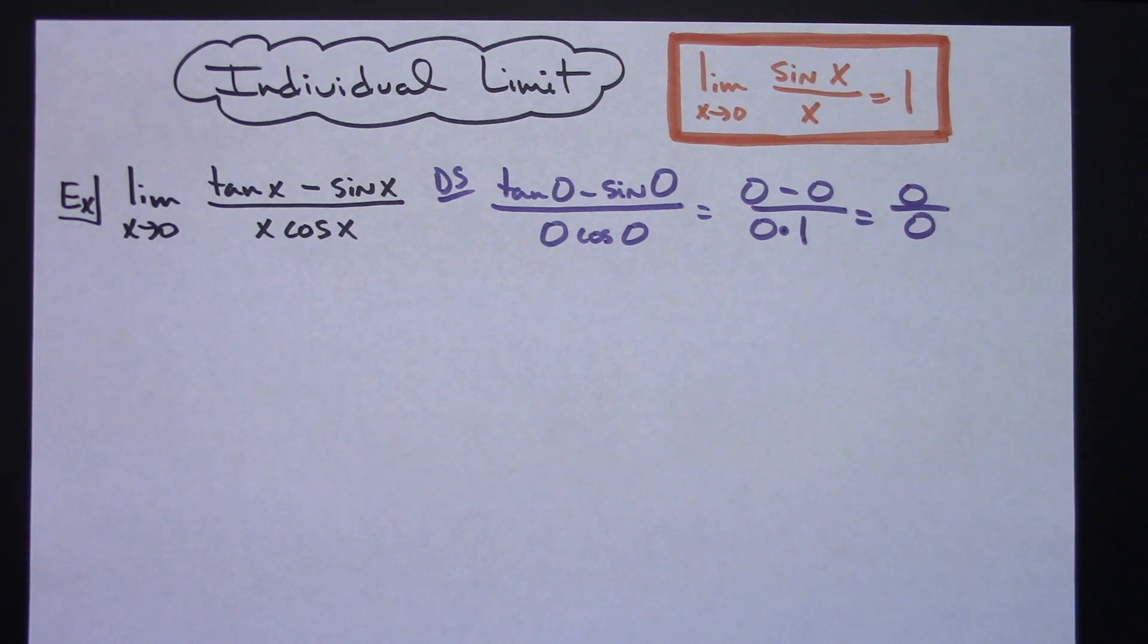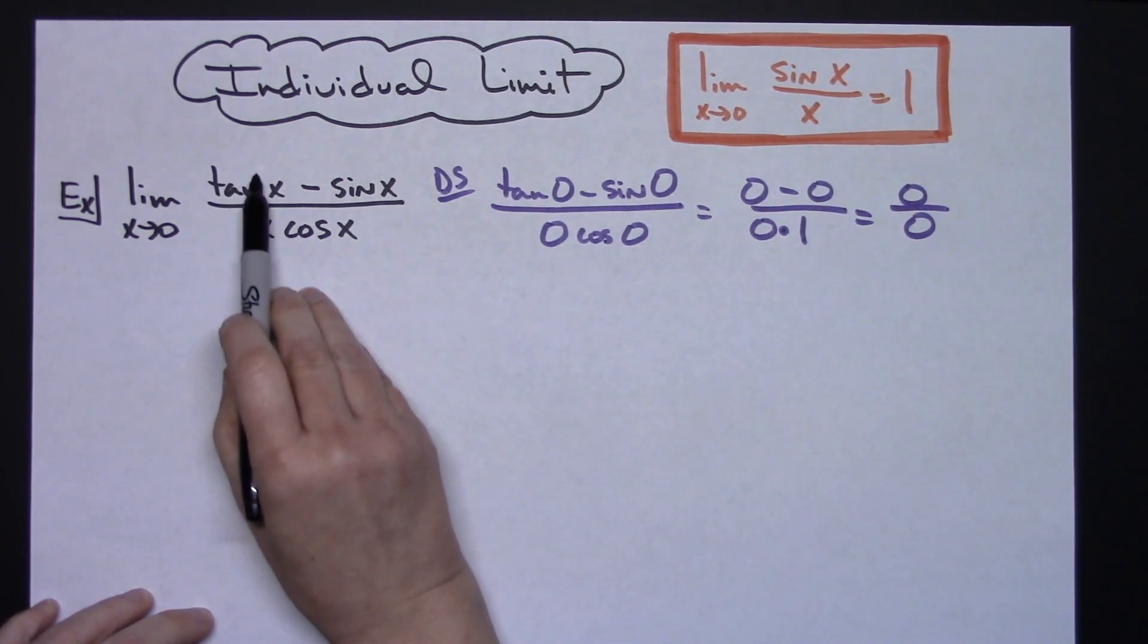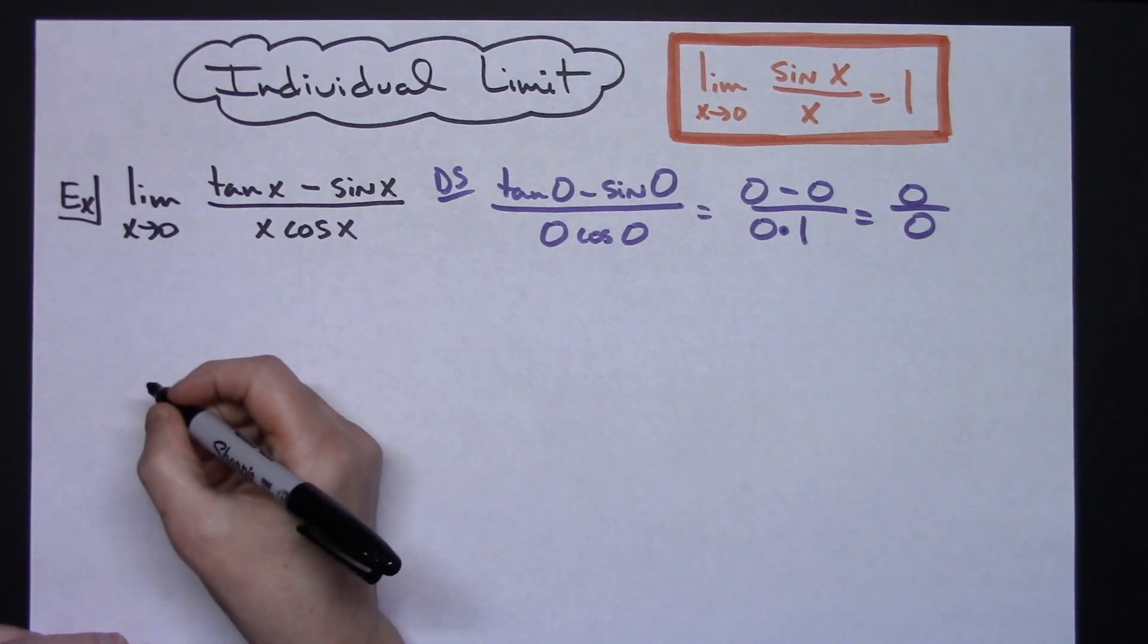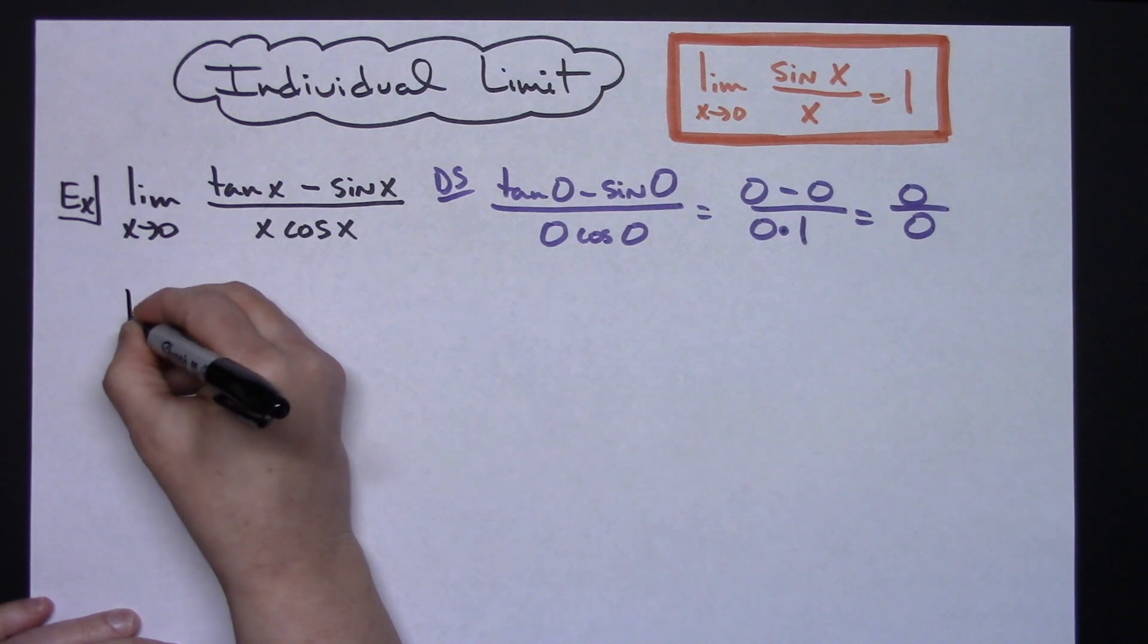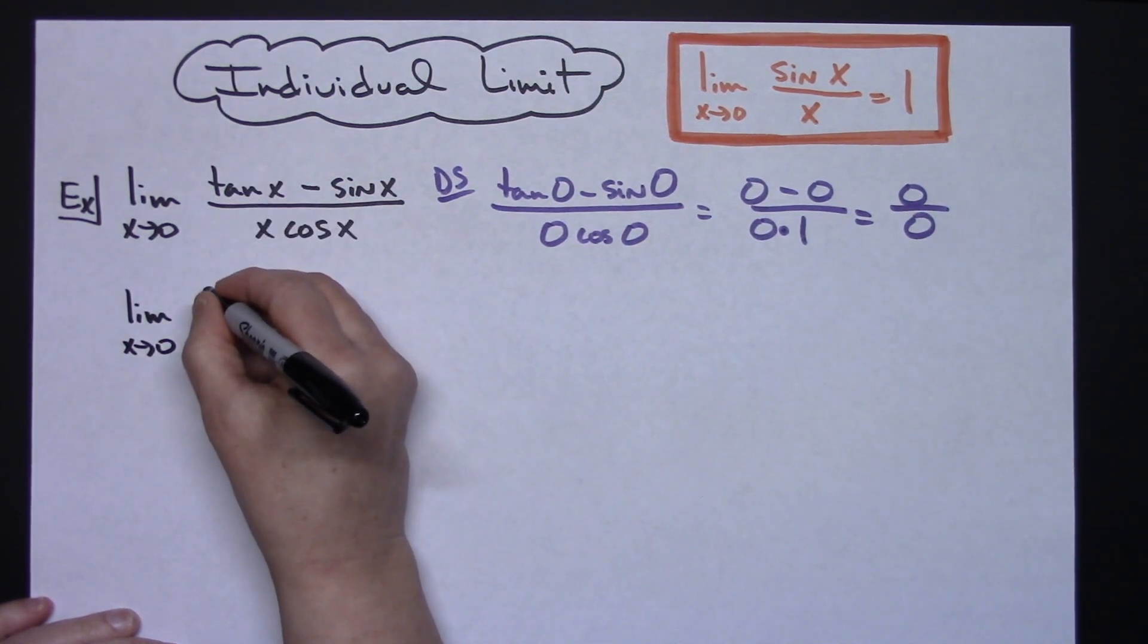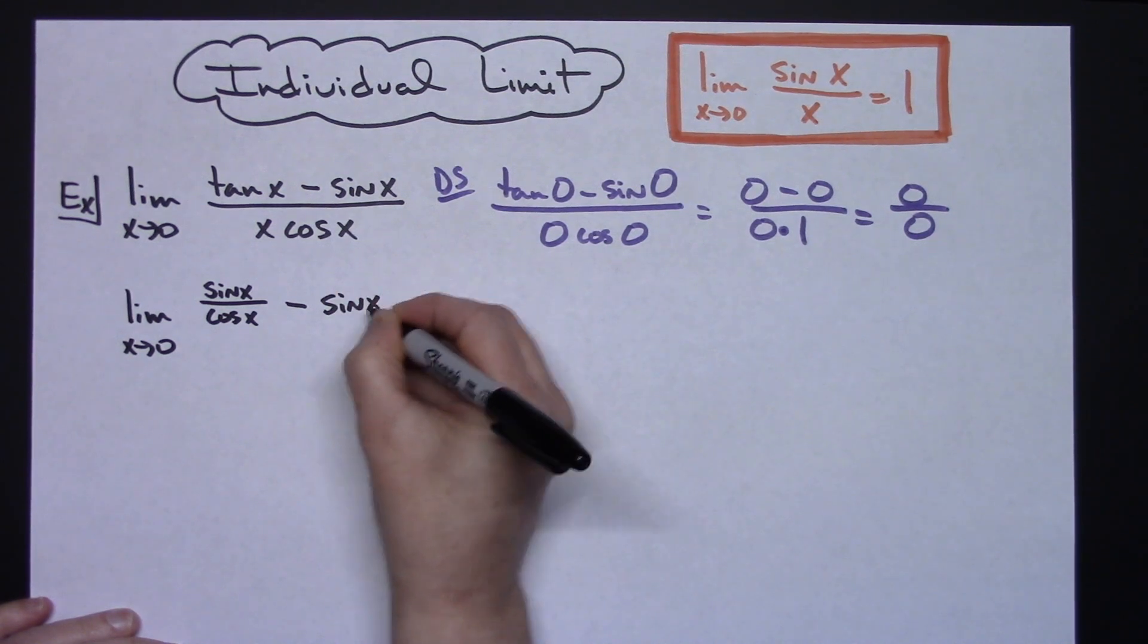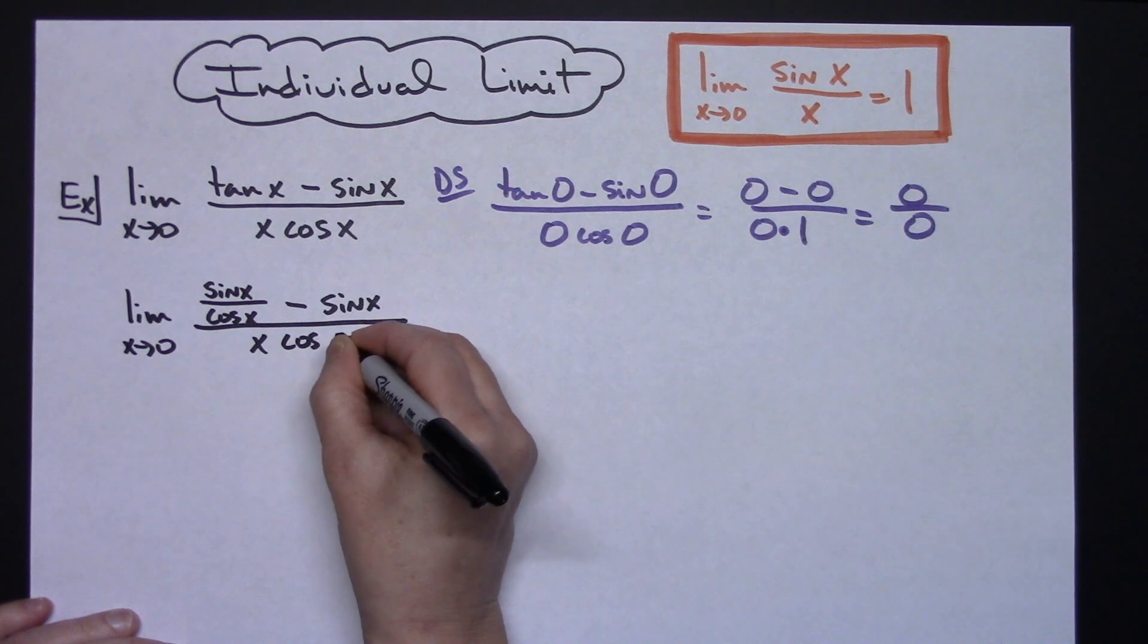Now to begin with, I think I'm going to rewrite tangent as sine over cosine. Since I have sines and cosines, things will start to cross out nicely if we make this into a complex fraction. We'll take the limit as x approaches 0 and write tangent as sin(x) over cos(x) minus sin(x), all over x cos(x).